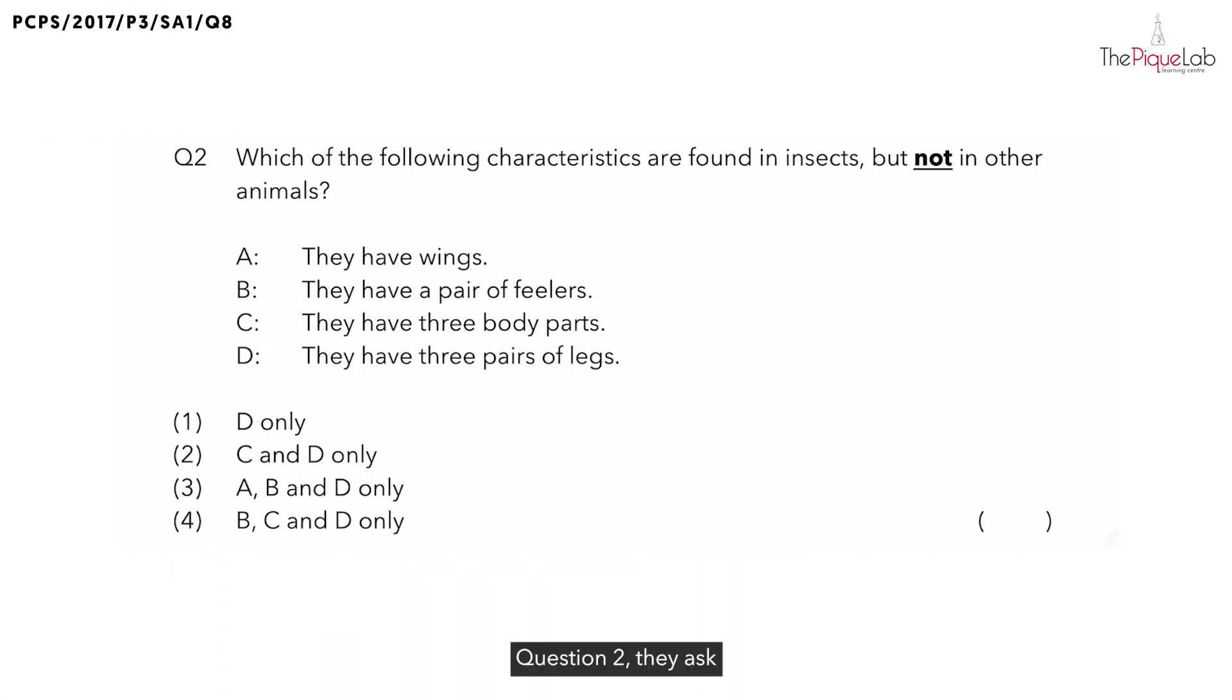Question 2 asks which of the following characteristics are found in insects but not in other animals. Let's check the first statement. Statement A says that insects have wings. Now, is this something that is found only in insects? No. Which other group of animals also have wings? They are animals like birds, so we can write this down: birds have wings too.